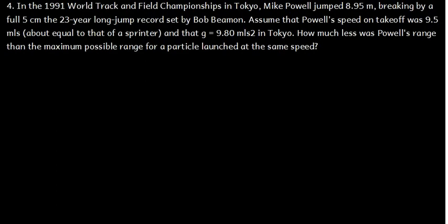Assume that Powell's speed on takeoff was 9.5 meters per second, about equal to that of a sprinter, and that g is 9.8 meters per second squared in Tokyo. How much less was Powell's range than the maximum possible range for a particle launched at the same speed?